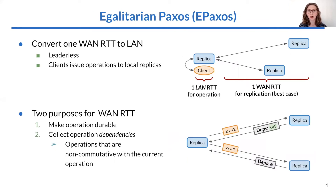EPaxos is a consensus protocol that aims to achieve low latency in a WAN. It does this by converting one of the wide area round trips to a local area round trip. EPaxos removes the stable leader, allowing clients to communicate with local replicas, making the only WAN RTT for replication. To compensate for the lack of stable leader, EPaxos assigns a second purpose to the WAN RTT: like traditional protocols, it makes the operation durable, and it is also used to collect operation dependencies — the operations that a replica is aware of for which execution order matters with respect to the current operation. Dependencies ensure that all replicas are consistent, executing interfering operations in the same order.